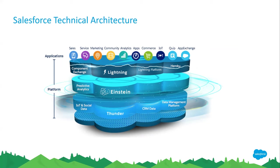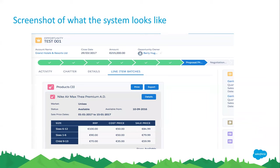This is a high-level overview of the Salesforce technical architecture. It's built similarly to what we've learned about in knowledge management class — you have your base layer of data collection, then information, and then knowledge, also known as applications. I also grabbed a screenshot of what the system looks like — this is a screenshot from Salesforce Lightning.